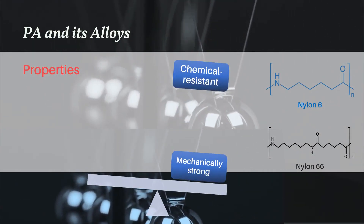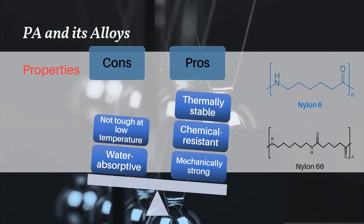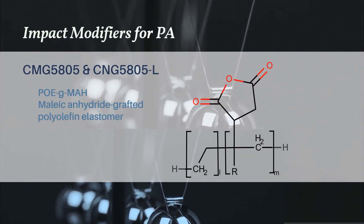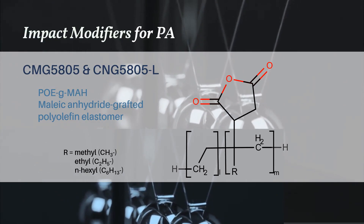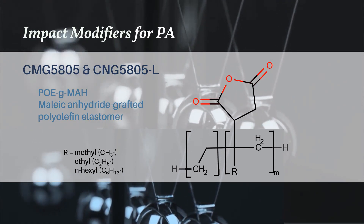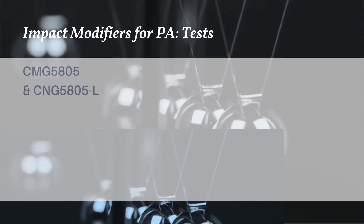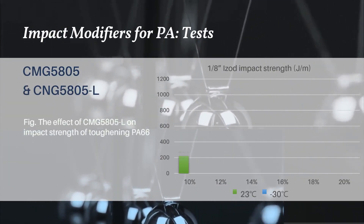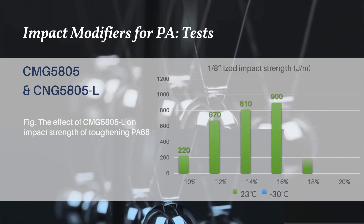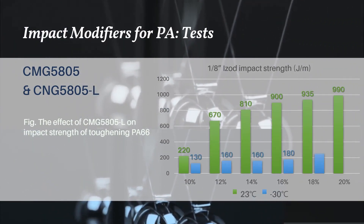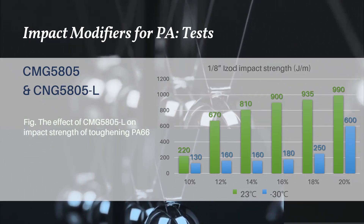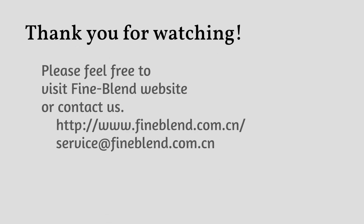Polyamide is a kind of engineering plastic, and the most famous PAs are nylon 6 and nylon 66. Fine Blend impact modifiers CMG 5805 and CMG 5805L are maleic anhydride grafted polyolefin elastomers for polyamides and related alloys. When CMG 5805L was added into PA66, it was found that 12% modifier addition effectively increased impact strength at room temperature, while low temperature impact strength was markedly improved by 20% addition. For more questions about Fine Blend products, please visit finblend.com.cn. Thank you.